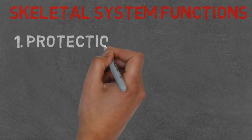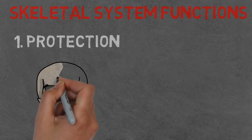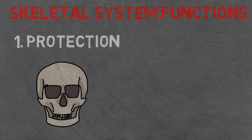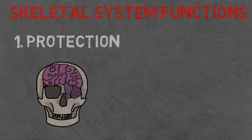Protection. The skeleton protects our delicate organs, preventing them from undergoing any harm. Some examples of these are the skull, which protects the brain.